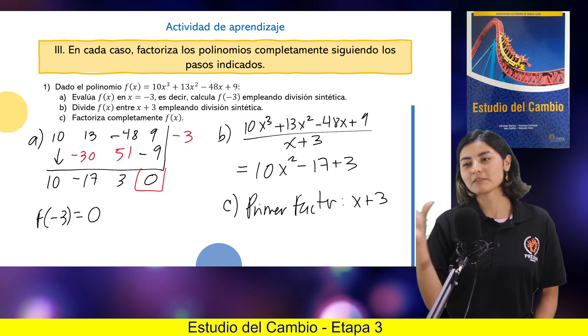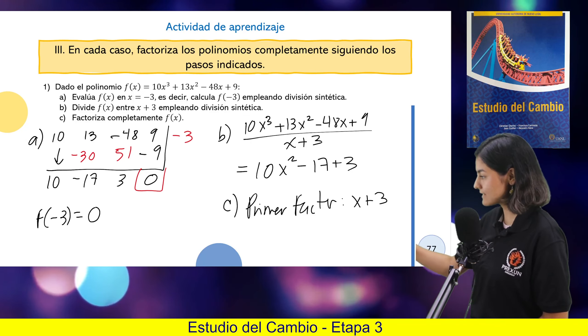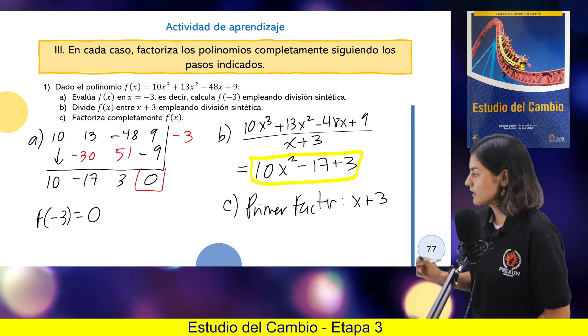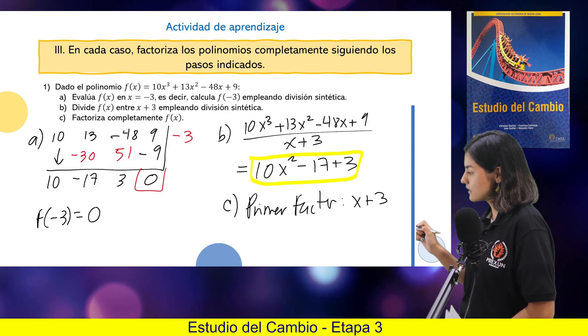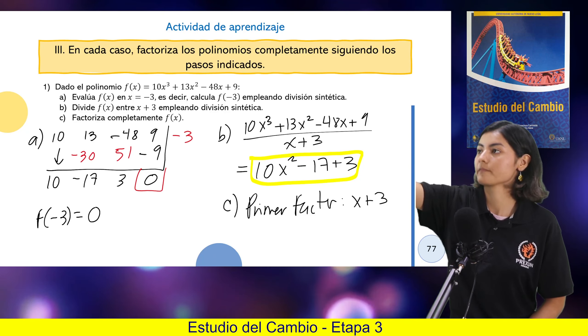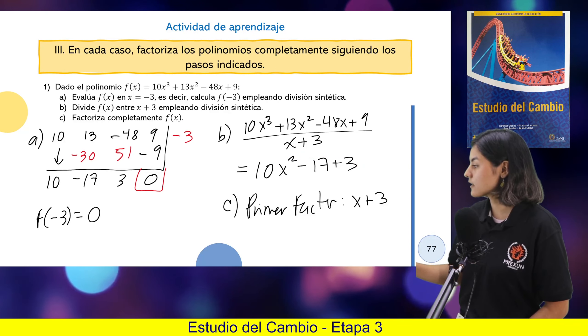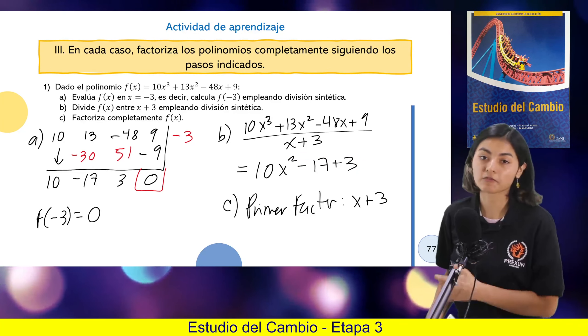Bueno, no es lo que me sobró tal cual, porque para hablar de sobrar se usa el residuo, pero este cociente lo único que tengo que hacer es factorizarlo. Si yo factorizo ese cociente, ya voy a tener todos los factores de mi polinomio original. Ya son cuadráticas y ya las sabemos factorizar.